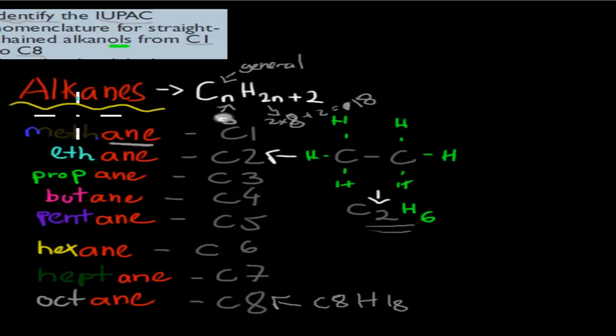So with this, the reason why I made them in different colors is because each of these prefixes, which is the first part, the colored part, refers to how many carbons are in the chain. So METH stands for 1, so 1 carbon, ETH stands for 2 carbons in the chain.